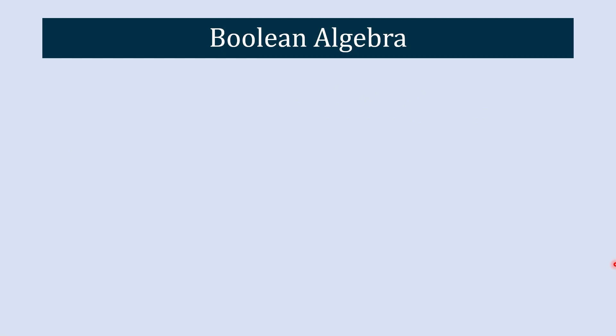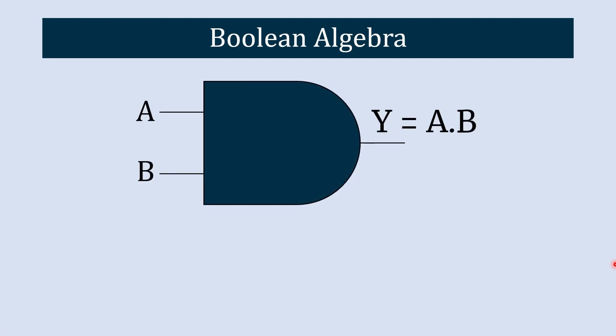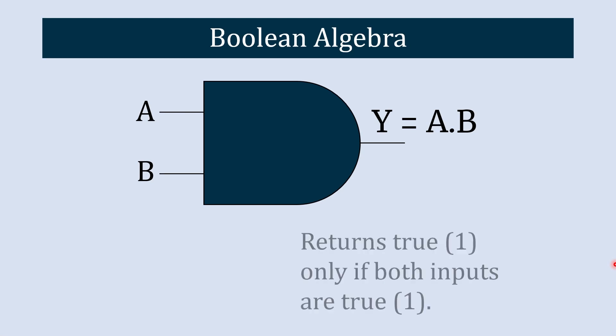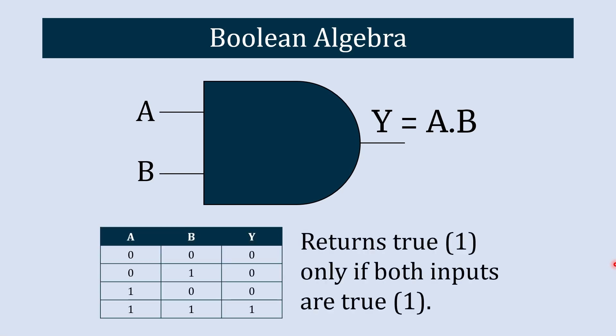After knowing the importance of Boolean algebra, it's time to talk about Boolean operators. Boolean operators are the building blocks of Boolean algebra and allow us to perform logical operations on binary variables. The first is the AND operator. This operator returns true or one only if both inputs are true or one.